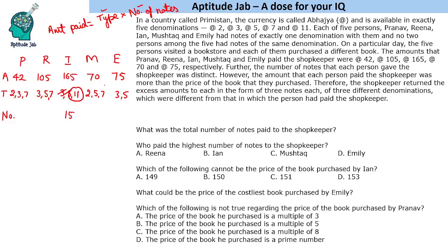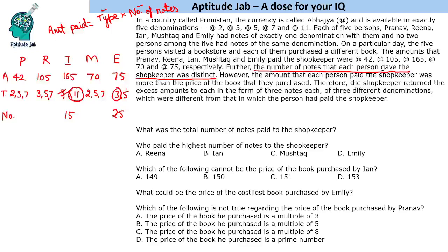Now, for the person who paid 75, if they paid in notes of 5, the number of notes would be 15. But 15 is already taken, and the number of notes must be distinct. So this person paid in denomination 3 and gave 25 notes to the shopkeeper.